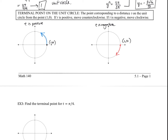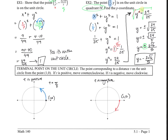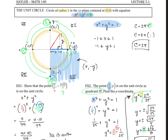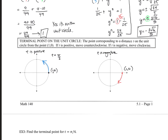For example, let's say we're told to find the terminal point for t = π/2. Well, where is π/2? We found that earlier — π/2 is right up at the top. Since it's positive, we're going to be heading counterclockwise. We go π/2 distance. What is that point? We found that earlier as well. That point is (0, 1). So that would be our answer: (0, 1).